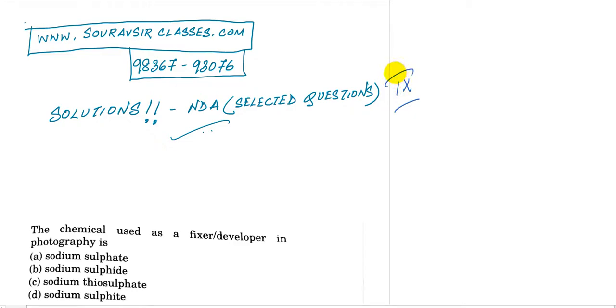So here the question asks: the chemical used as a fixer or developer in photography is sodium sulfate, sodium sulfide,